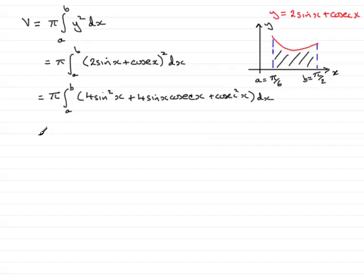Next I want to tidy this up. So we have pi times the integral from a to b still. 4 sin squared x, I'll leave that as just 4 sin squared x at the moment. But this term here, 4 sin x cosec x, now remember that cosec x is 1 over sin x, so 4 sin x times 1 over sin x is just going to come to 4. So that's going to be just simply 4. And then cosec squared x, I'll just leave that in, cosec squared x dx.